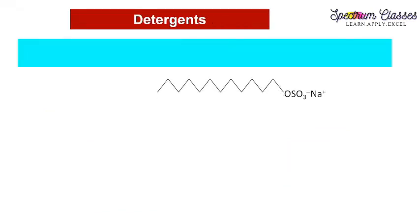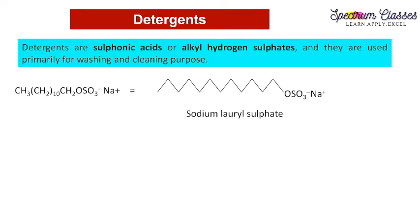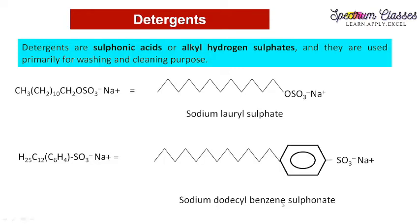Now coming to detergents — detergents have a structure where each corner represents CH2 and the end represents CH3, and they have sodium salts of sulfates. Detergents can be defined as the sulfonic acids or alkyl hydrogen sulfates of long-chain hydrocarbons used primarily for washing and cleaning. They contain a carbon chain of length C8 to C22 and are synthetic. One example is sodium lauryl sulfate; another is sodium dodecyl benzene sulfonate, which also contains a benzene ring.